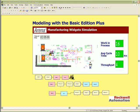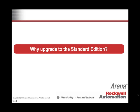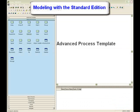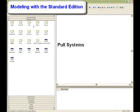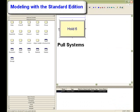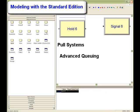You now understand some of the key differences between the Basic Edition and Basic Edition Plus. So why upgrade to the ARENA Standard Edition package? You will make a significant jump in the complexity of models that you can build when moving to the Standard Edition package. Access to the Advanced Process Modeling constructs unlocks a lot of the power of ARENA. Pull systems can now be easily modeled with the control enabled by the hold and the signal modules.